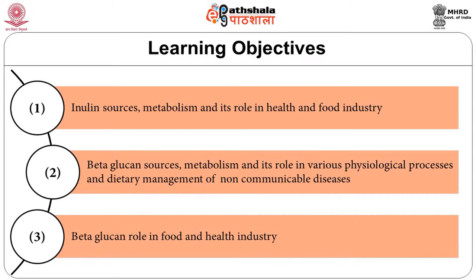With this background, we are going to learn today about these two important components — their metabolism, their sources and their uses. The objectives are: the learner will be able to understand inulin sources, metabolism and its role in health and food industry; beta-glucan sources, metabolism and its role in various diseases, physiological processes and dietary management of non-communicable diseases; and beta-glucan's role in the food and health industry.